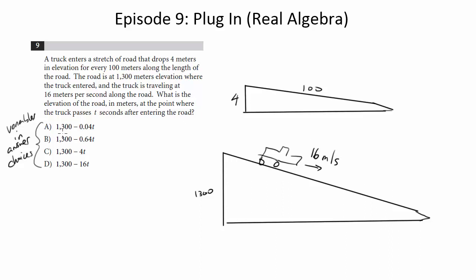Notice all of our choices are 1300 minus some quantity and that makes sense because our elevation should be declining or decreasing as we go along this road. So a couple ways to handle this again let's try plugging in.